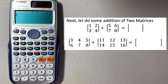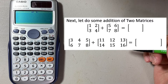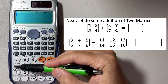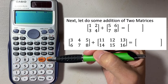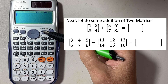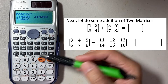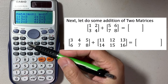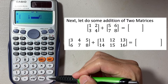Let's do some addition of two matrices. To clear the matrices, just go to mode and then 1 — it's been cleared. Go to shift, matrix — you will not see anything because it's been cleared. So now let's store the first matrix as a 2x2. Go to mode 6 and then matrix A. We have 2x2 — that's number 5. Enter 1, 2, 3, 4. This is matrix A.